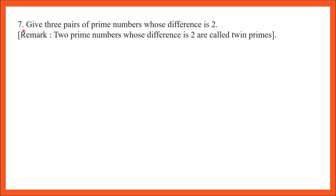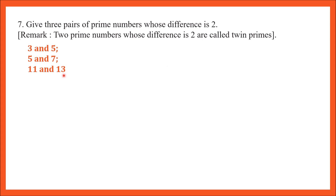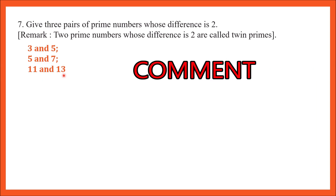Question number 7: give three pairs of prime numbers whose difference is 2. Such prime number pairs with a difference of 2 are called twin prime numbers. Examples: 3 and 5, 5 and 7, 11 and 13 — each pair has a difference of 2. Another example is 17 and 19. You should comment more examples.